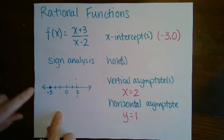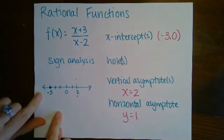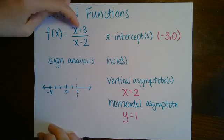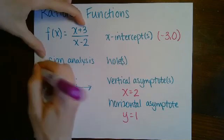Then what you do is we're going to pick a point that's to the left of negative 3. It can be anything. Let's say it's negative 5. If we had negative 5 plus 3, the answer would be negative.